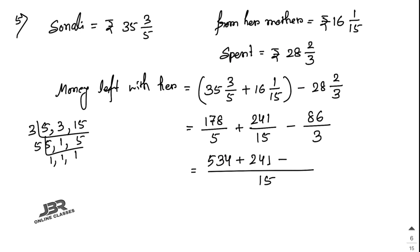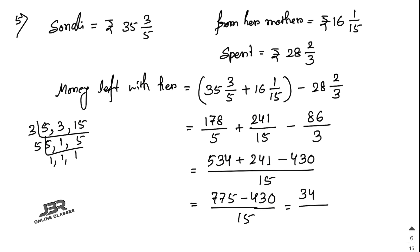With LCM 15: 15 divided by 5 is 3, so 178 times 3 equals 534; 15 divided by 15 is 1, so write 241; 15 divided by 3 is 5, so 86 times 5 equals 430. Add 534 and 241 to get 775, then subtract 430 to get 345/15.